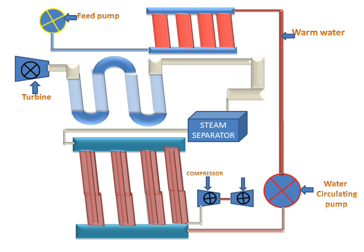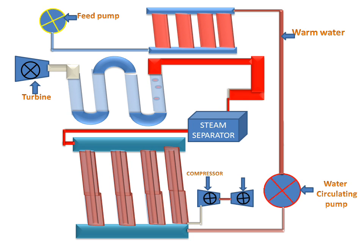The radiating section will create the saturated steam. And this saturated steam will go to the steam separator. The steam separator will separate the saturated steam and water. And this saturated steam will go to the superheater, where it will be converted into superheated steam.